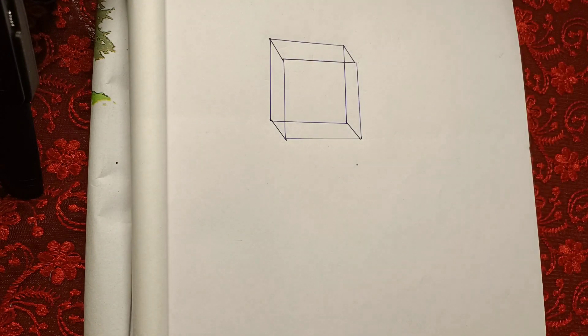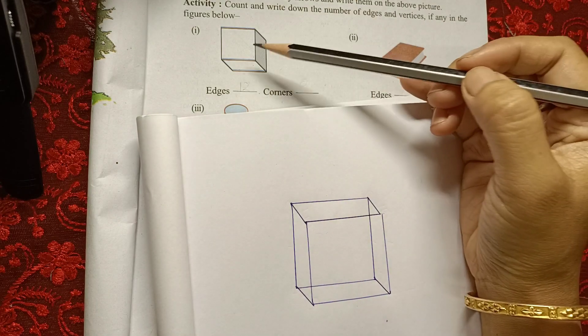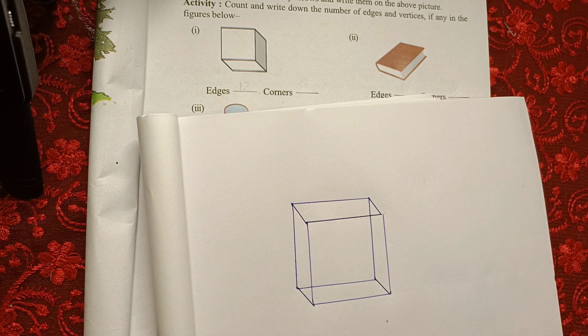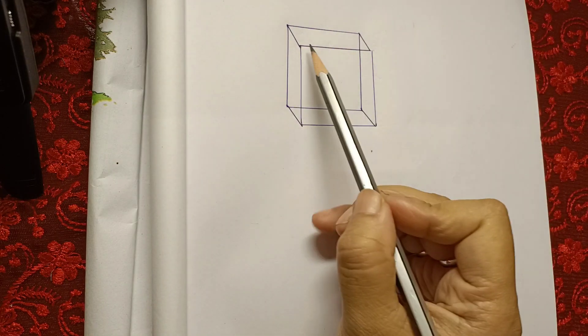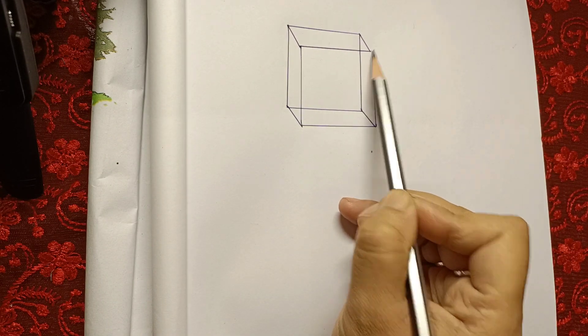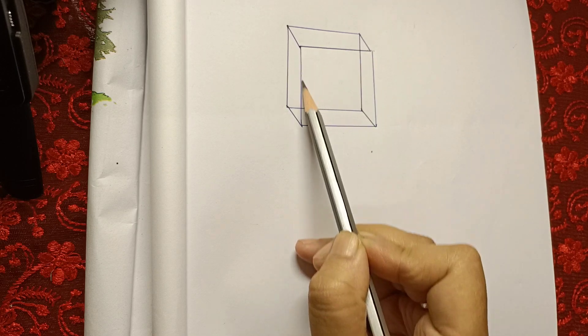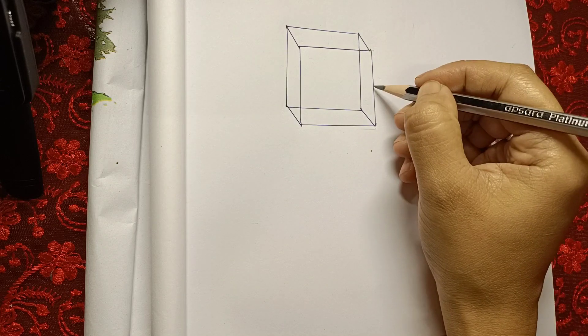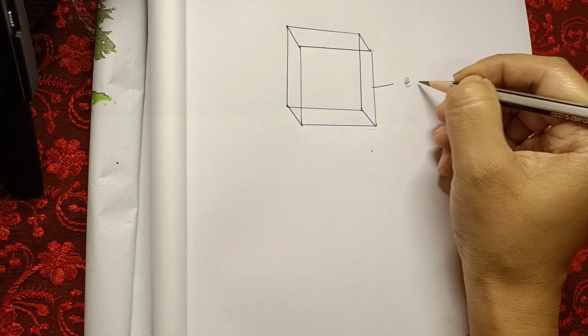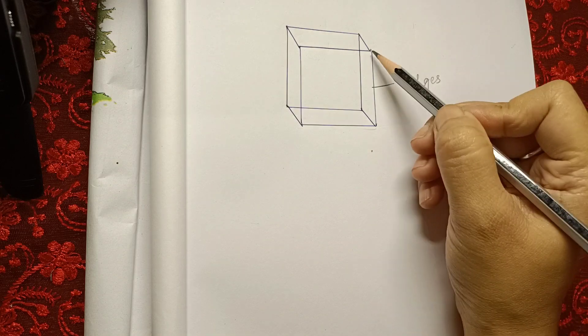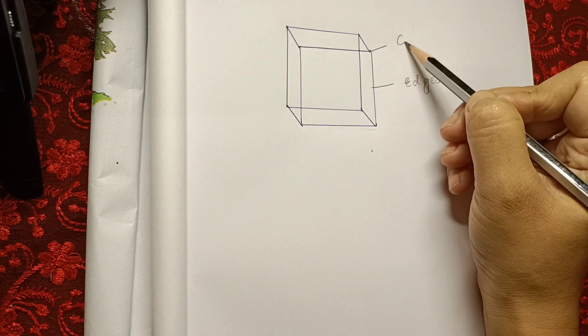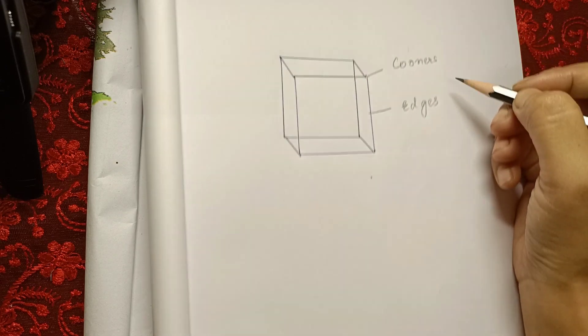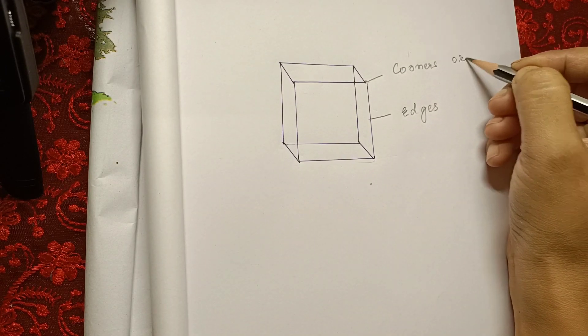This is like a cube but we cannot see the other side, so to make it clear I have drawn a cube here. These are called the edges where two corners are joined. These lines are called the edges and this is called the corner. So the lines are called the edges and these are called the corners or vertices.